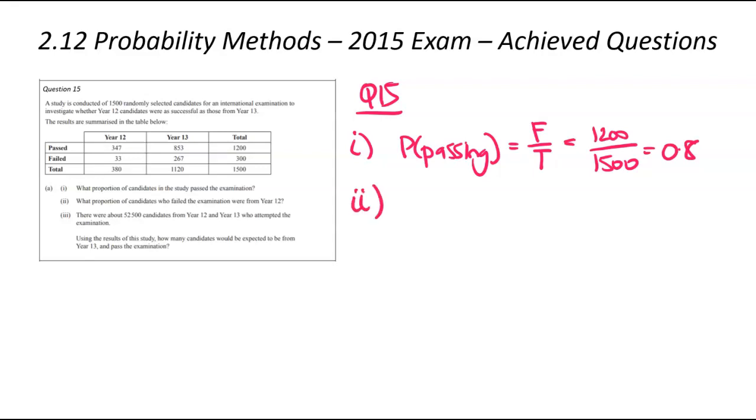We're now moving on to part II. What proportion of candidates who failed the exam? This time around, we're not looking at all of the candidates. We're only looking at the candidates who failed the exam. What proportion of those were year 12?